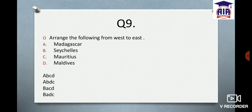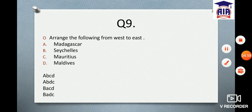Next question: Arrange the following islands from west to east: Madagascar, Seychelles, Mauritius, and Maldives. The options are: A) A, B, C, D — B) A, B, D, C — C) B, A, C, D — D) B, A, D, C. Type your answer in the comment section and solve it carefully. We covered map-based content, so recall which countries or locations you found on the map.